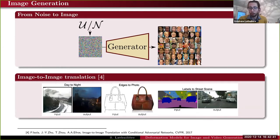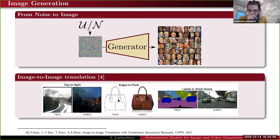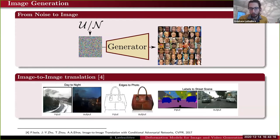In many applications we are not interested in unconditional distributions but in conditional distributions. For example, if you have a day image and want to convert it to a night image. Or if you want to convert a drawing to an RGB image, conditioning the output on the input edges. Or another example: if you have semantic maps where each color depicts the class of the object for each pixel, you want to learn the mapping from this semantic map to the output image.